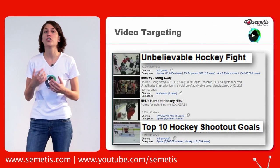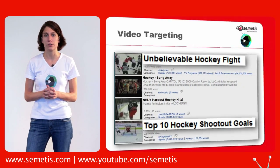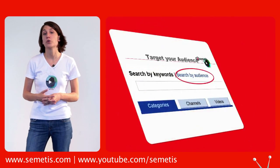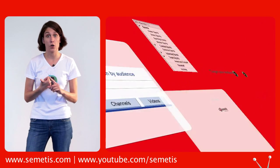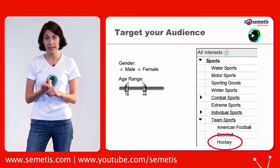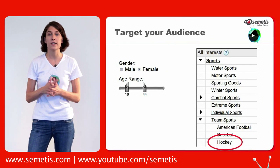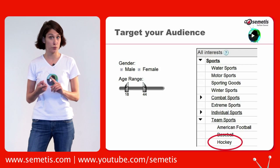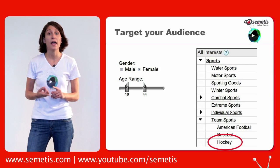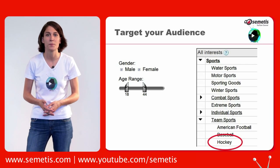On the other hand, 'top hockey 10 shootout goals' might be a better option. Finally, you can also choose audience targeting and select your audience by sex, age, or interest. In this case, we thought that hockey players were usually between 18 to 44 and interested in, guess what, hockey.